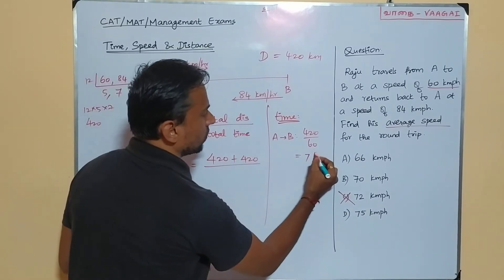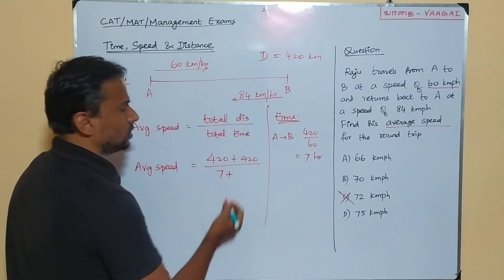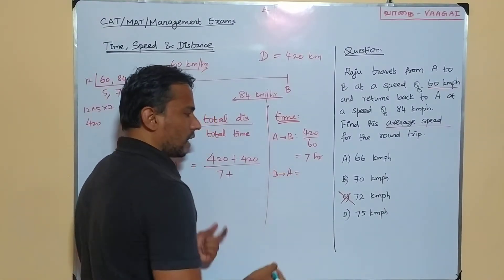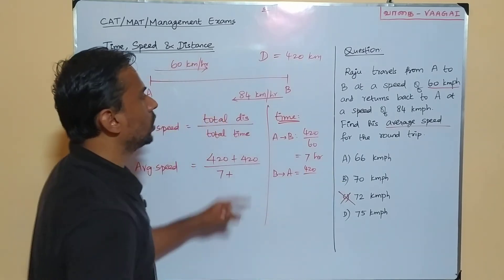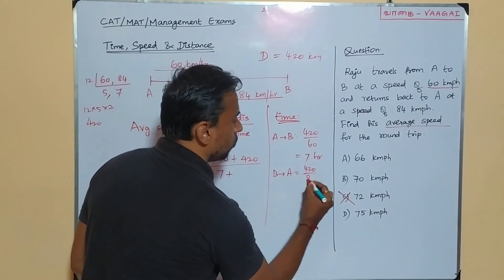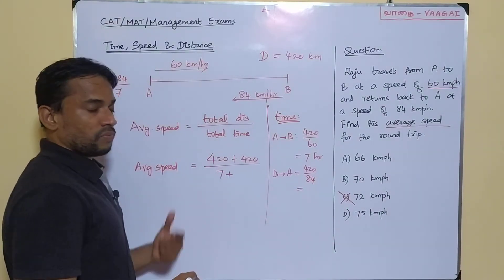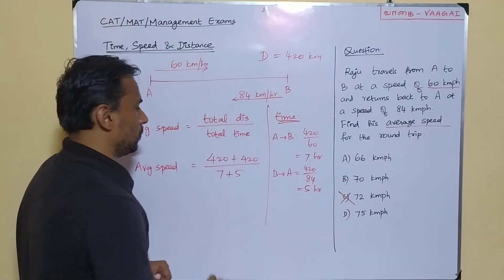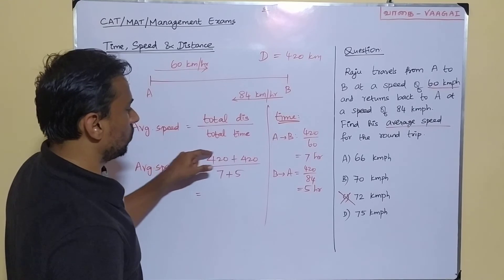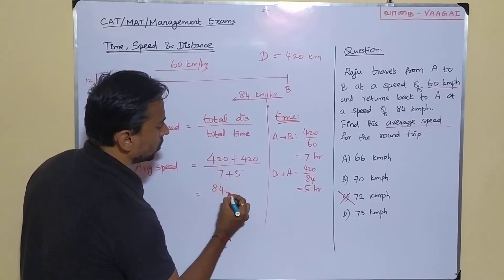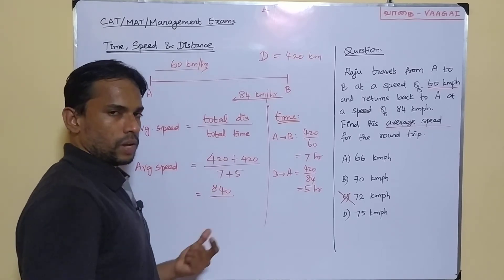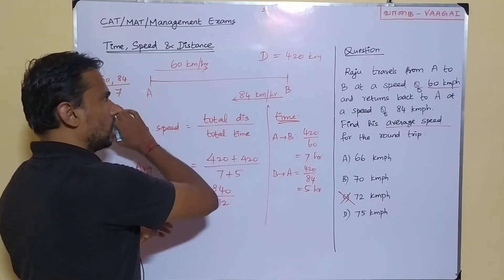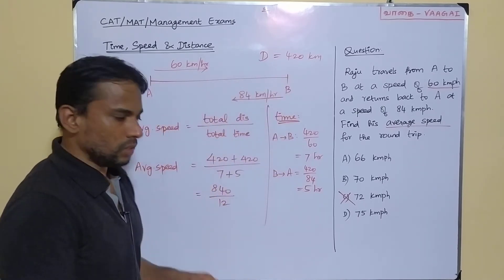So 7 hours for the A to B leg. For the return journey B to A, the distance is again 420 but the speed is 84. So 420 divided by 84 is exactly 5 hours. Total time is 7 plus 5 = 12 hours. So overall, the person travels 840 kilometers in 12 hours. This is the meaning of average speed — the total distance covered divided by the total time taken.